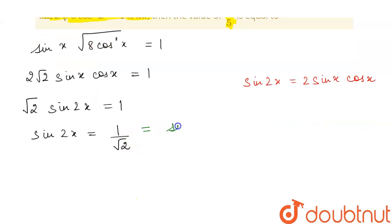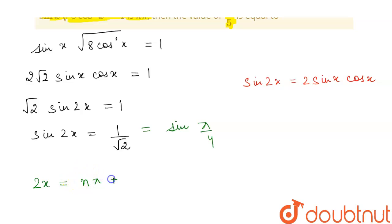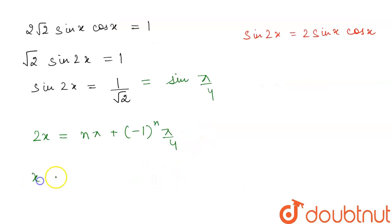We know that sin(π/4) = 1/√2. Applying the general formula, we get 2x = nπ + (-1)^n · α, where α = π/4. So the value of x equals nπ/2 + (-1)^n · π/8.